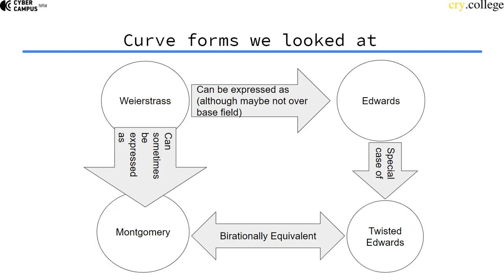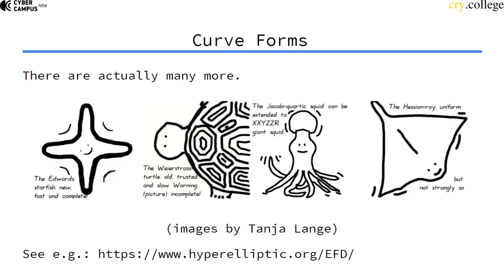Actually, there are a lot more forms of elliptic curves that we won't go over in this course, because they're not that relevant for real-world applications. In the real world, mostly used are Weierstrass curves, Montgomery curves, and twisted Edwards curves.